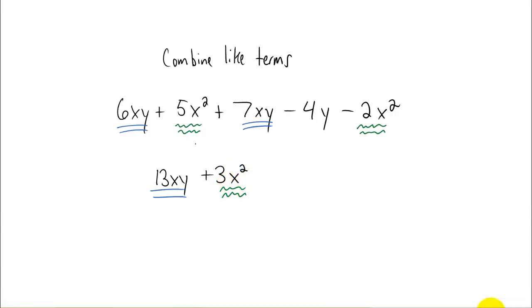Well this 4y term is all we have left and it's not a like term with anything else. It doesn't have the same variables with the same powers as the other terms. So we just have to leave it alone and carry it down. So we combined two sets of like terms and there was one term that wasn't a like term with anything else. So we just kind of had to carry it down.